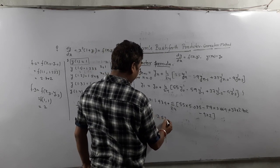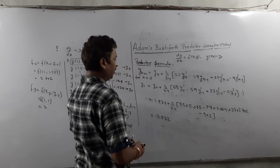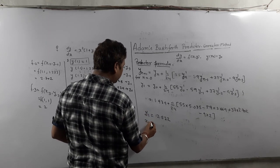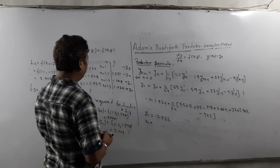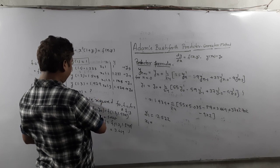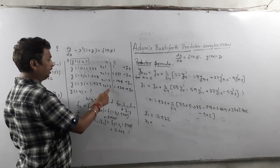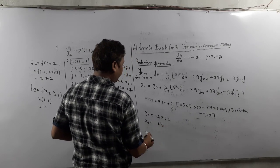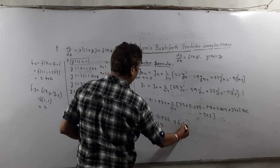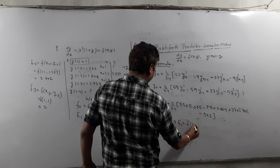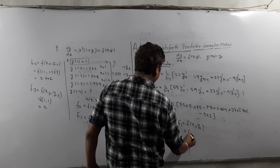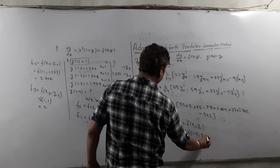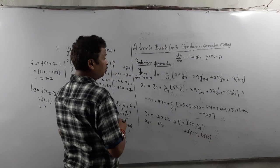The predictor result is y1 = 2.572. Now we correct this value. We have y1, and x1 = 1.4 because x0 was 1.3. So x1 = 1.4, y1 = 2.572. We need to calculate f1, the function value at x1 = 1.4 and y1 = 2.572, because that is required in the corrector formula.